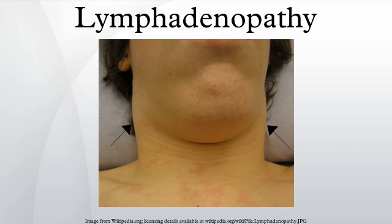Causes: Lymph node enlargement is recognized as a common sign of infectious, autoimmune, or malignant disease. Examples may include reactive acute infection or chronic infections. The most distinctive sign of bubonic plague is extreme swelling of one or more lymph nodes that bulge out of the skin as buboes. The buboes often become necrotic and may even rupture.